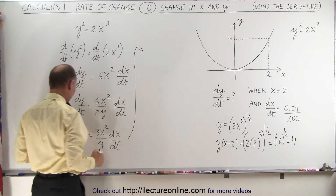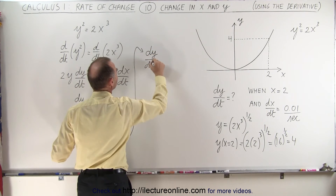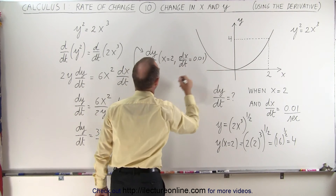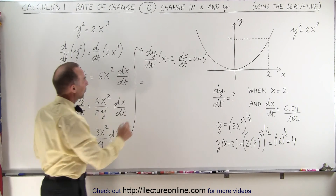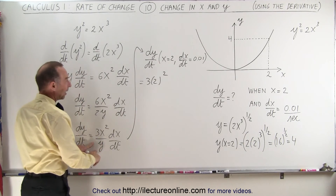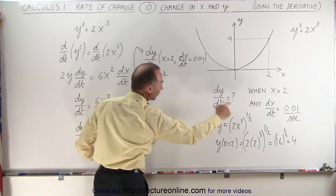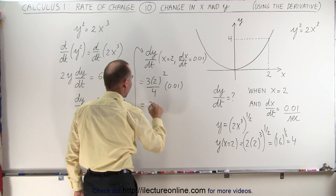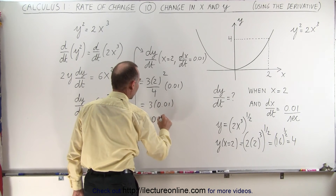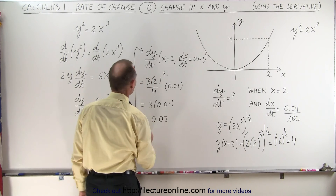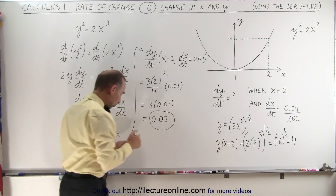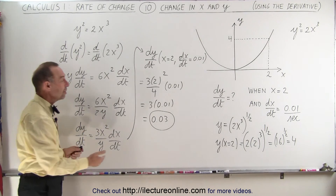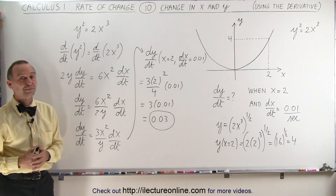Now we plug everything in: dy/dt when x equals 2 and dx/dt equals 0.01 is equal to 3 times 2 squared divided by y — which is 4 — times dx/dt, which is 0.01. This is equal to 4 divided by 4, which is 1, times 3. So we get 3 times 0.01, or 0.03 — whatever units per second. That means y is changing at 0.03, which means y is changing 3 times as fast as x. And that's how it's done.